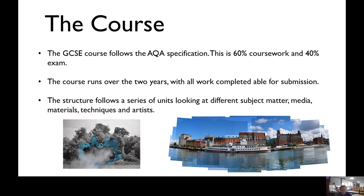The course basic information: the GCSE course follows the AQA specification. It's 60% coursework and 40% exam. The course runs over two years — year 10 and 11 — with all work completed able for submission. So everything you complete in year 10 and year 11 will be marked. The structure follows a series of units looking at different subject matter, media, materials, techniques and artists — so a range of experimentation.